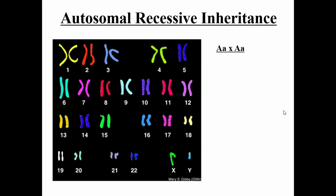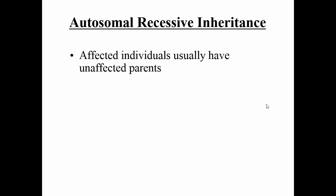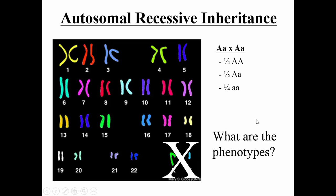For autosomal recessive inheritance, if we cross two heterozygotes — remember, autosomal recessive, so it's not going to be on X and Y — we'll see the typical 1 to 2 to 1 genotypic ratios expected for this type of cross. The question is always: what are the phenotypes? The genotypic ratios are always the same for an autosomal inheritance pattern, but interpreting the phenotypes from those genotypes differs based on whether inheritance is recessive or dominant. With autosomal recessive, only a quarter of these individuals are affected — you need two copies of the little-a allele to see that recessive phenotype.